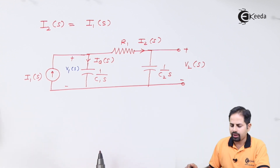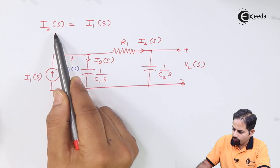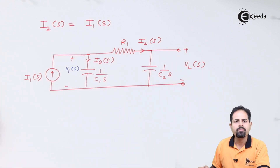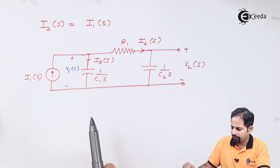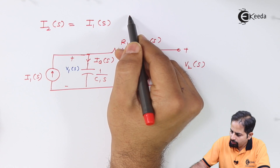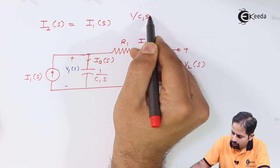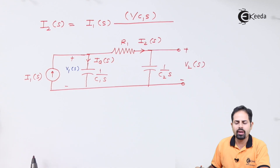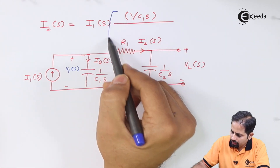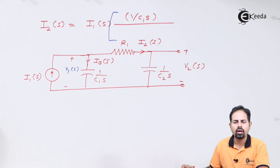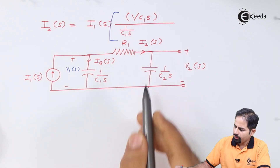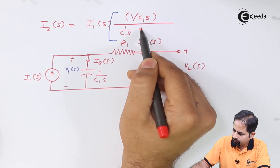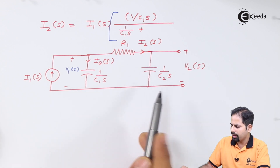Applying current division, i2(s) is total current I₁(s) multiplied by the branch impedance parallel to it. The impedance of the branch with capacitor C1 is 1/(C1·s). So the expression is: I₂(s) = I₁(s) · [1/(C1·s)] divided by [1/(C1·s) + R1 + 1/(C2·s)].